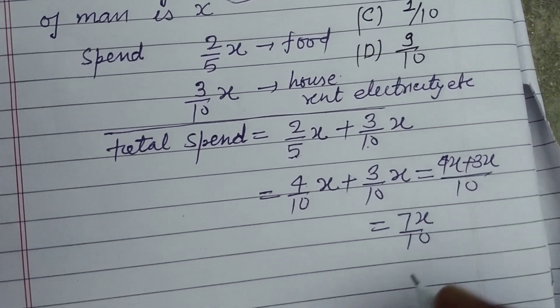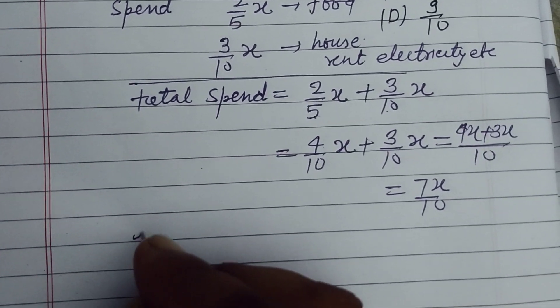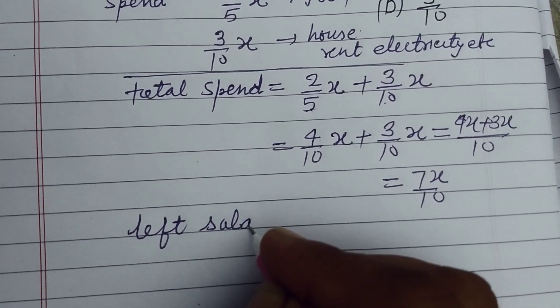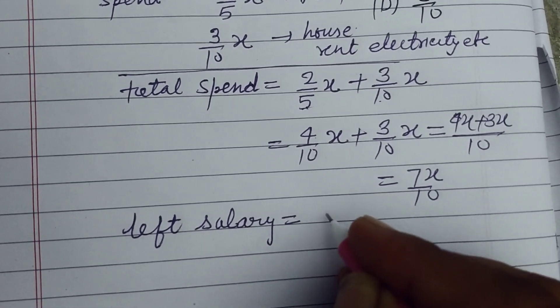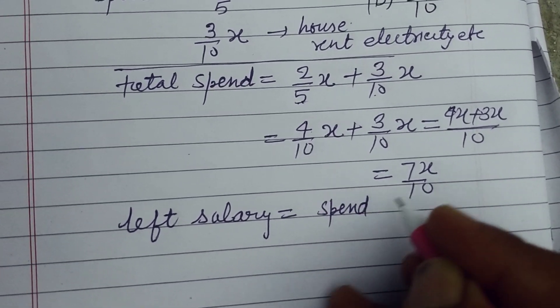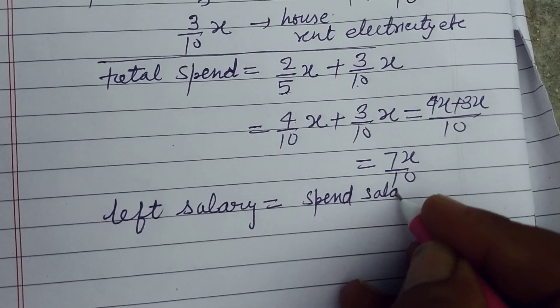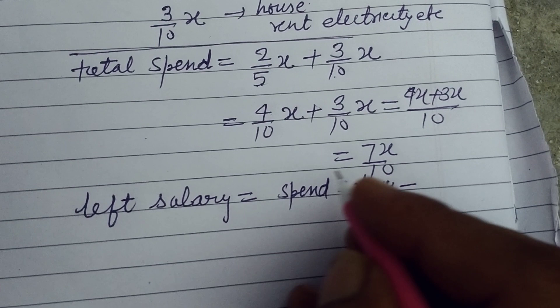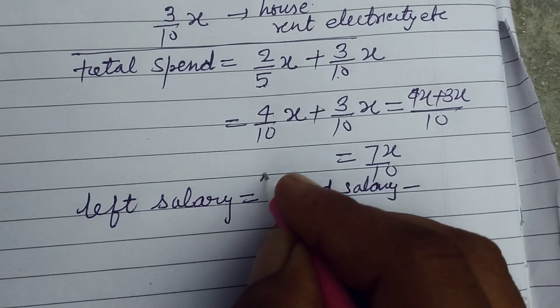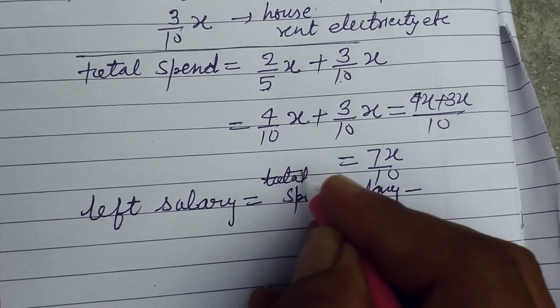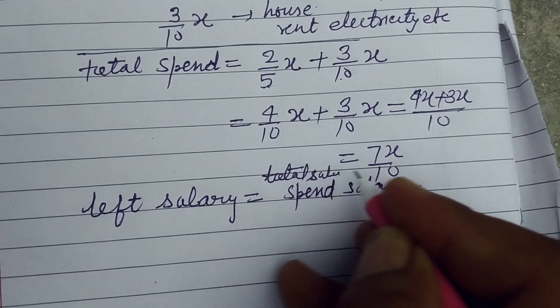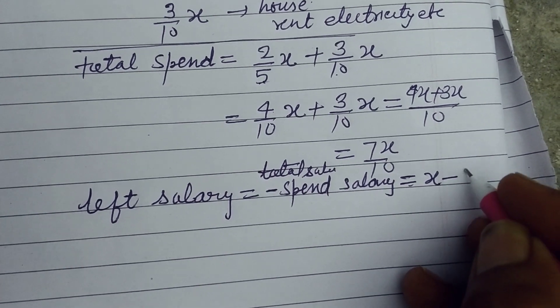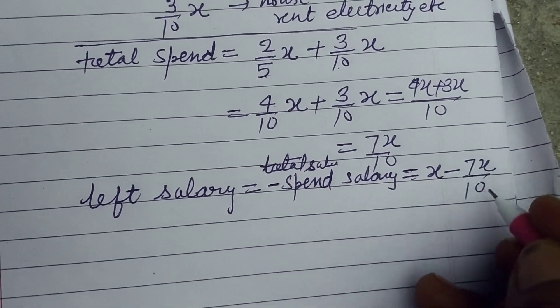We add the numerator 4 x plus 3 x upon 10, so this is 7 x upon 10. Now left salary, left salary equal to spend salary minus total salary, sorry, minus spend salary.